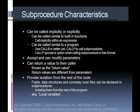Subprocedures accept parameters, and those parameters can be modified just like a program-to-program call. But subprocedures can also return a value to the caller — a hidden parameter returned from the subprocedure to the caller. So you can say X equals my routine, and my routine would return some value assigned to the variable X. They also provide isolation from the rest of the code, so fields, data structures, and files can be isolated within a subprocedure — called local variables or local files.